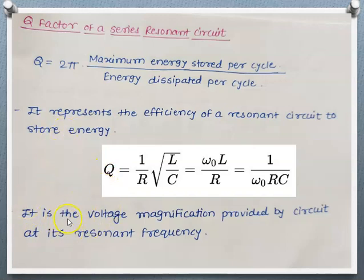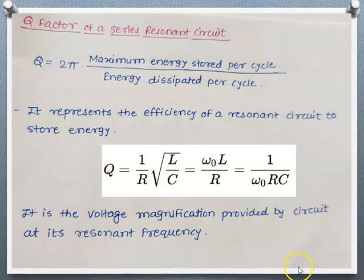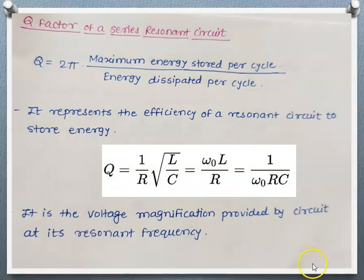The Q factor represents the voltage magnification provided by the circuit at its resonant frequency. Suppose we have an input RMS voltage of 5 volts across a series R-L-C circuit. At resonance, XL equals XC, so they cancel each other, and the full input voltage appears across the resistor. However, the voltage across the inductor and capacitor is equal in magnitude but opposite in nature, and equals Q times the input voltage — so VL equals VC equals Q × 5 volts. This is called voltage magnification.